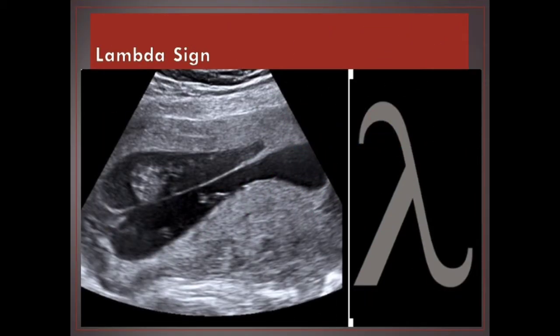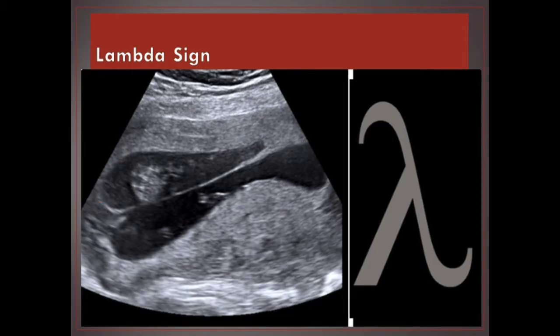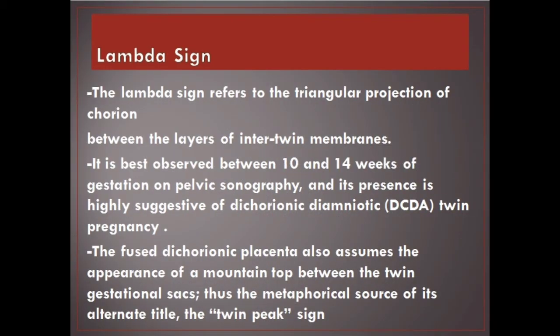Lambda sign. The lambda sign refers to the triangular projection of chorion between the layers of inter-twin membranes. It is best observed between 10 and 14 weeks of gestation on pelvic sonography, and its presence is highly suggestive of dichorionic diamniotic (DCDA) twin pregnancy. The fused dichorionic placenta also assumes the appearance of a mountaintop between the twin gestational sacs, giving rise to its alternate title, the twin peak sign.